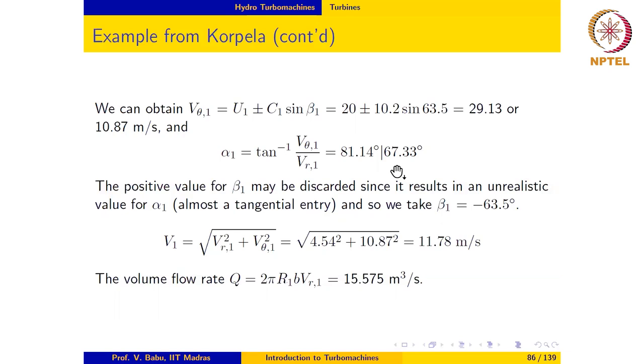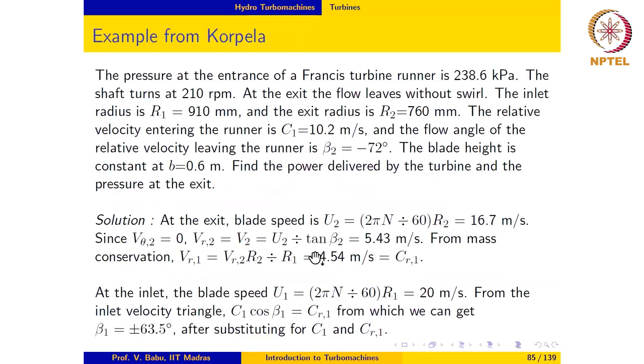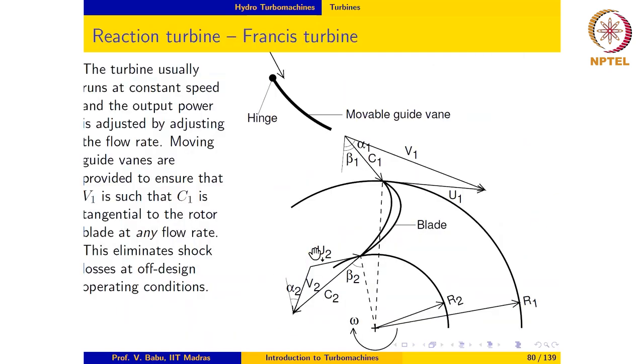Now, 81.14 as can be seen is too extreme. So let us take a look at the velocity triangle one more time. An angle of 81.14 for α1 will make this absolute velocity vector almost parallel to the U1 or blade speed direction. And so it would appear as if the absolute velocity vector is parallel to the tangent at this point. And so the flow seems to be entering the rotor almost tangentially.